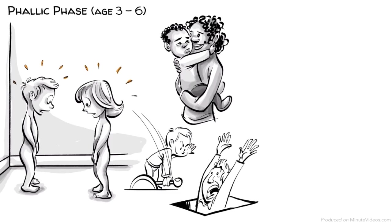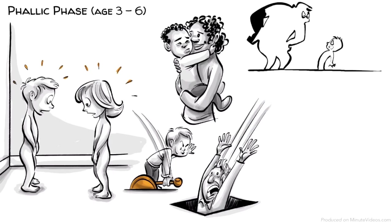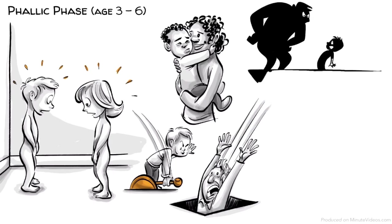Ernst and Hans desire to possess their mother and fantasize about getting rid of their father. But they know that their father is stronger and fear being punished for their desire. Freud called this castration anxiety.